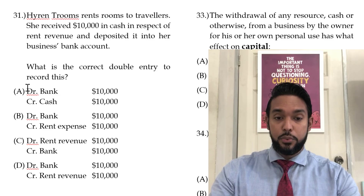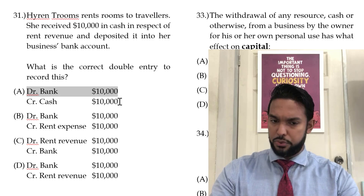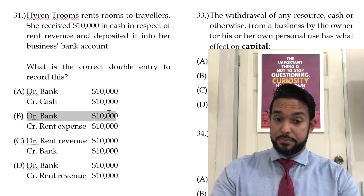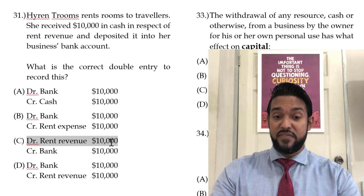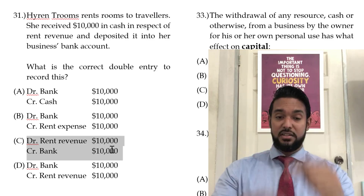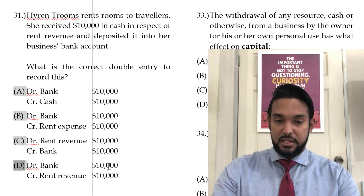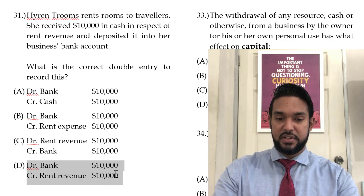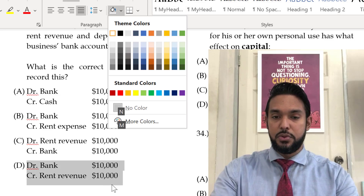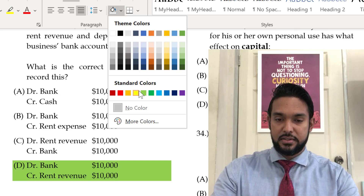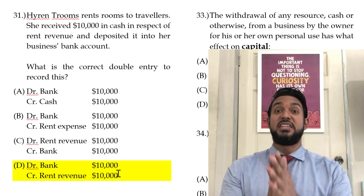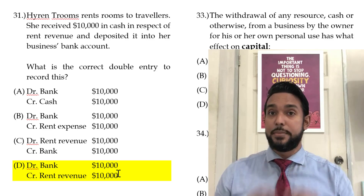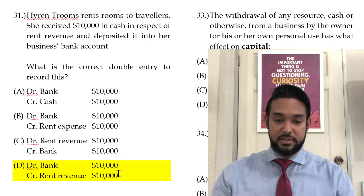So we're looking for a debit to bank and a credit to rent revenue. Option A has a debit to bank but a credit to cash — no, that won't work. Option B has a debit to bank but a credit to rent expense — that's not going to work either. Option C is debit rent revenue, credit bank — that's a reversal of the correct entry. And item D has a debit to bank and a credit to rent revenue — so that's the answer. If you guys have any questions, leave them in the comments below.